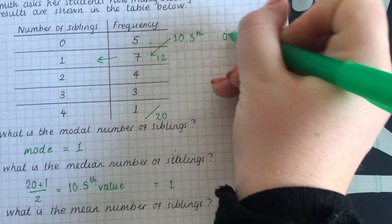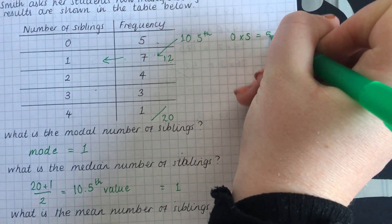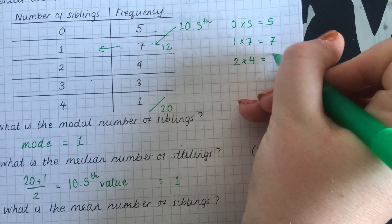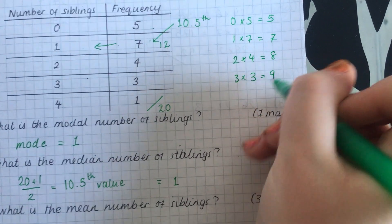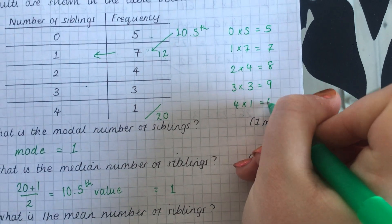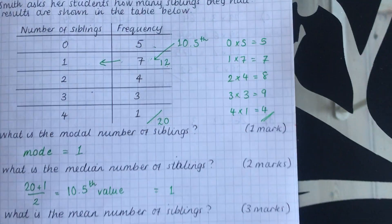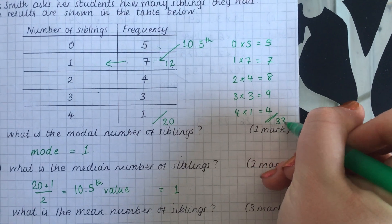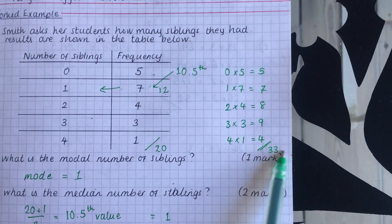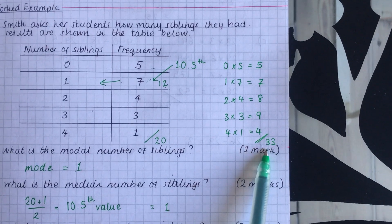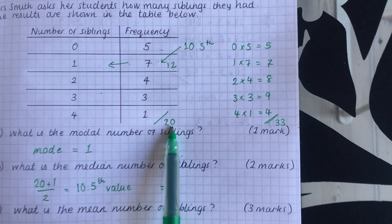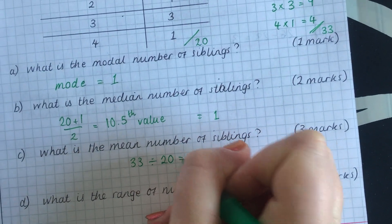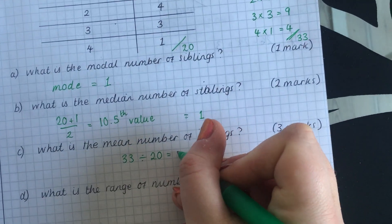So first things first, we're going to do 0 times 5 is 0. 1 times 7 is 7. 2 times 4 is 8. 3 times 3 is 9. And 4 times 1 is 4. Now, when we total these up, we get 33. And my final step, don't forget, is you have to do 33 - so that's all the numbers added together. And then you have to divide by how many there are. So we're going to do 33 divided by 20, which gives you 1.7.